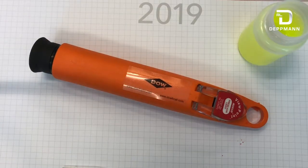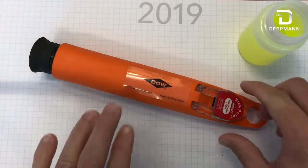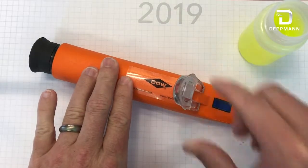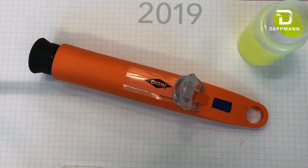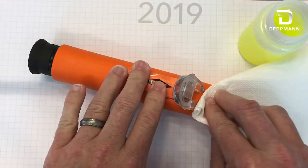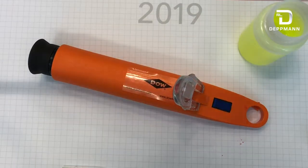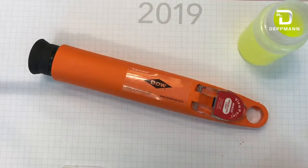So the first thing you want to do prior to using the meter is to ensure that the surface is clean with a damp cloth. Once you know that surface is clean, you can collect your sample.